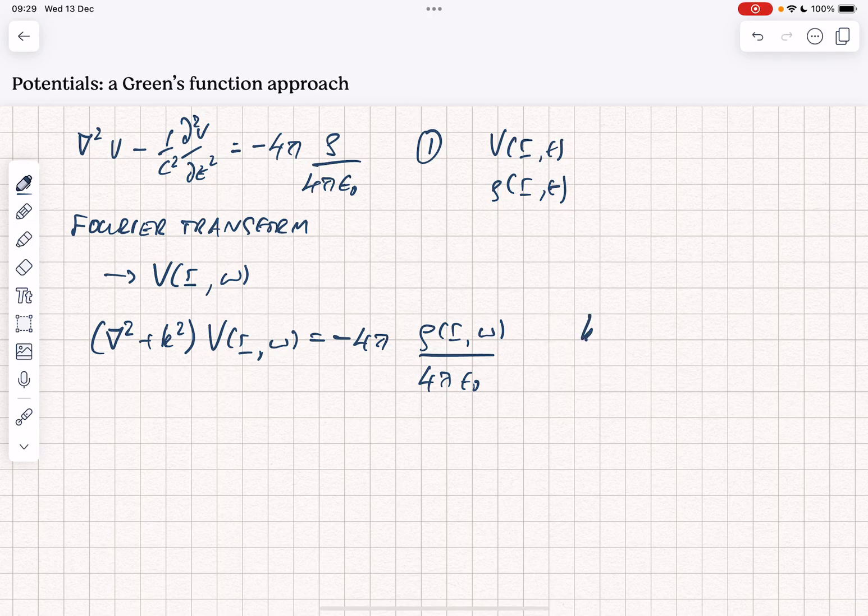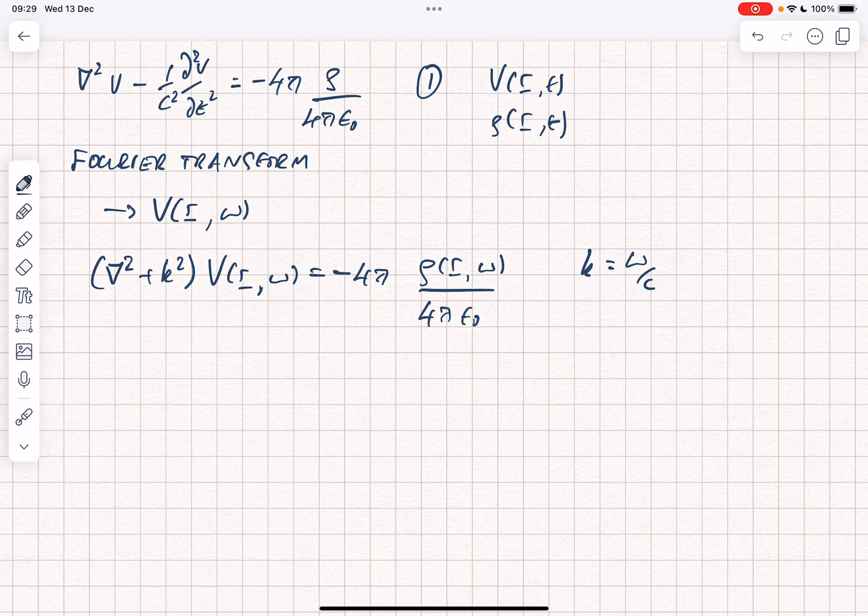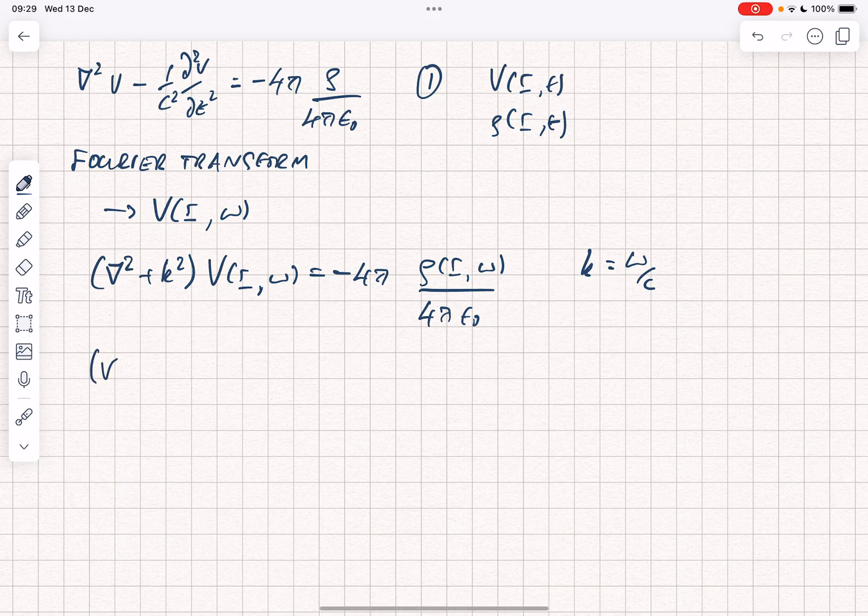We define k equals omega over c, and we don't have to worry about dispersion. Now it's well known that the Green's function for the Helmholtz equation solves the equation without the source. So you have del squared plus k squared acting on gk of r comma r prime.